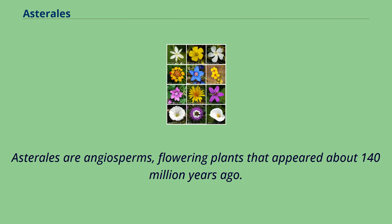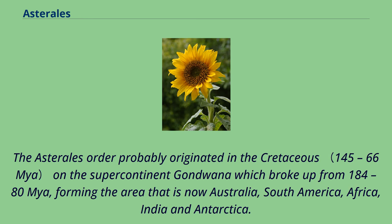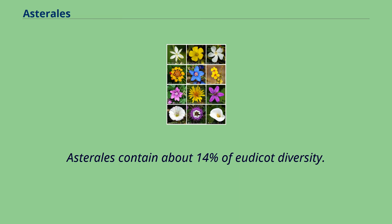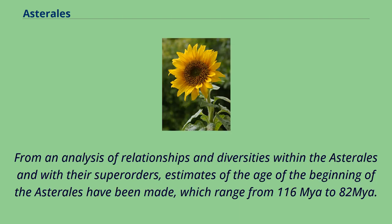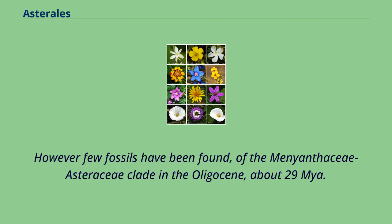Asterales are angiosperms, flowering plants that appeared about 140 million years ago. The Asterales order probably originated in the Cretaceous on the supercontinent Gondwana, which broke up from 184 to 80 Mya, forming the areas that are now Australia, South America, Africa, India, and Antarctica. Asterales contain about 14% of eudicot diversity. From an analysis of relationships and diversities within the Asterales and with their superorders, estimates of the age of the beginning of the Asterales range from 116 Mya to 82 Mya. However, few fossils have been found of the Menyanthaceae–Asteraceae clade, dating to the Oligocene, about 29 Mya.